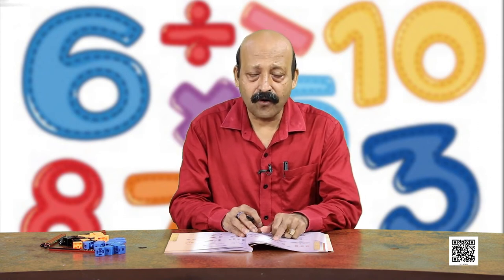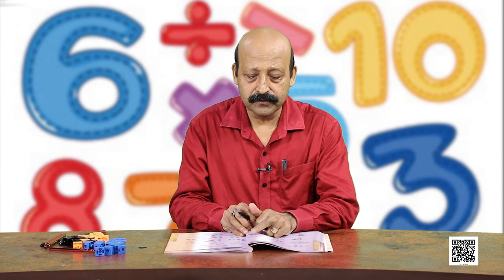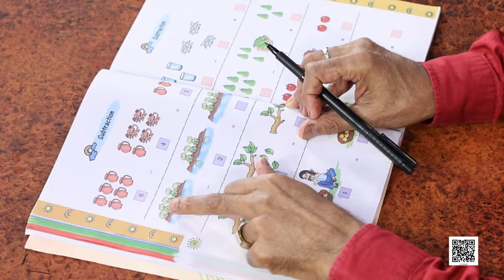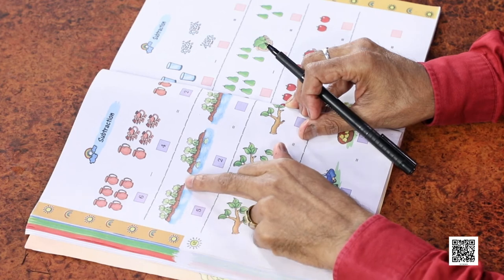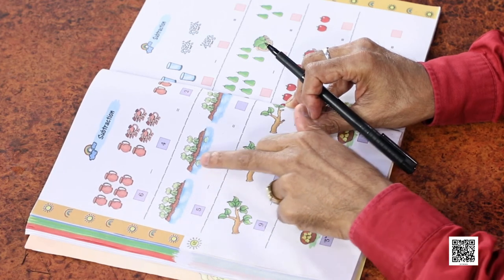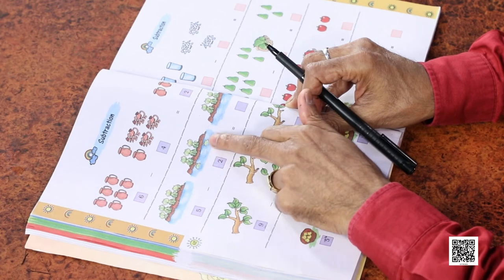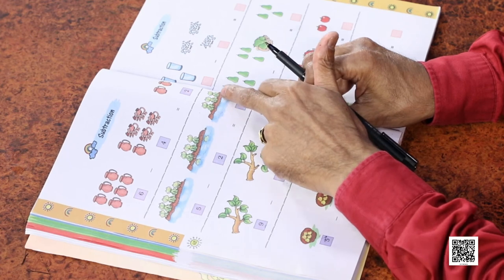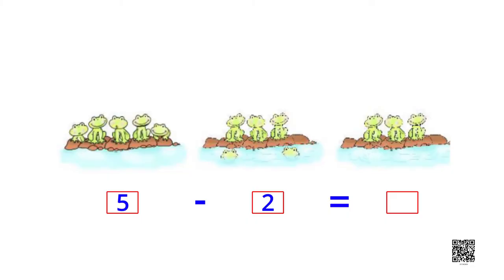We read it as minus - you will pronounce it: minus. 6 minus 4 equal to 2. Now try to tell me: what will be 5 minus 2? Let us see it in the picture. There are 5 frogs: 1, 2, 3, 4, 5 frogs. Minus 2 means 2 have gone to the pond. So how many are left? 1, 2, 3. We can write: 5 minus 2 is equal to 3.